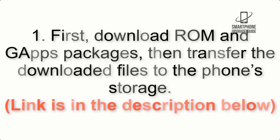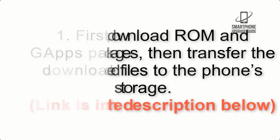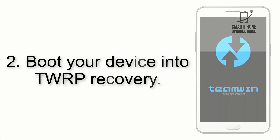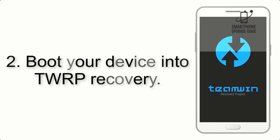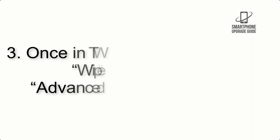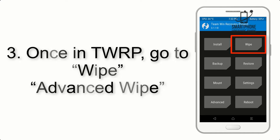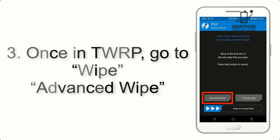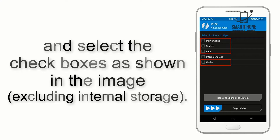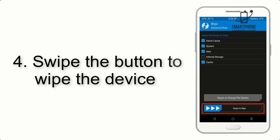Step 2: Boot your device into TWRP recovery. Once in TWRP, click on Wipe, then Advanced Wipe, and select the checkboxes as shown in the image, excluding internal storage.